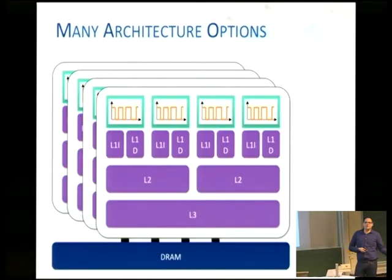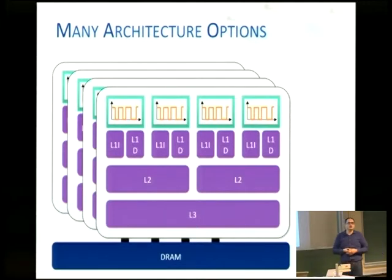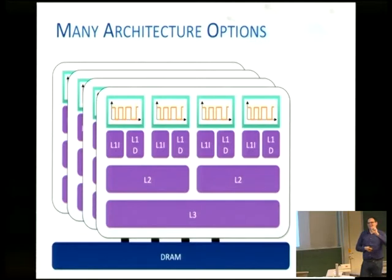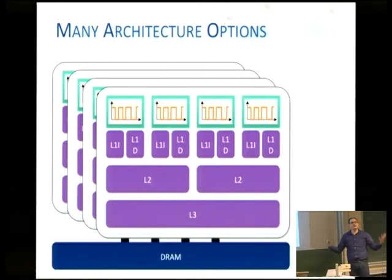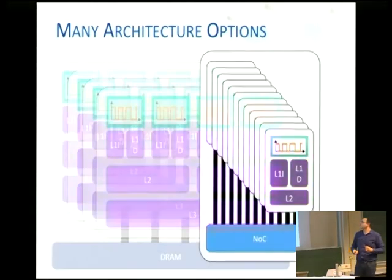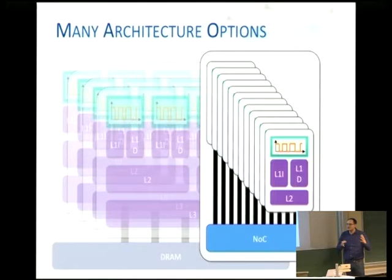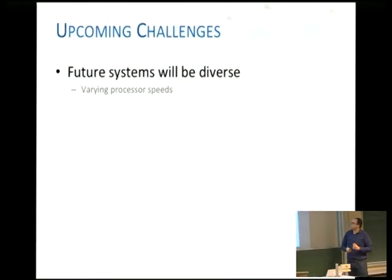We also have many different architecture options. This is a typical processor configuration you would see in a multiprocessor node — a four-socket node where each socket has four cores and a shared L3. But we also see things like a Xeon Phi-type architecture, which is much different from the typical processor architecture.